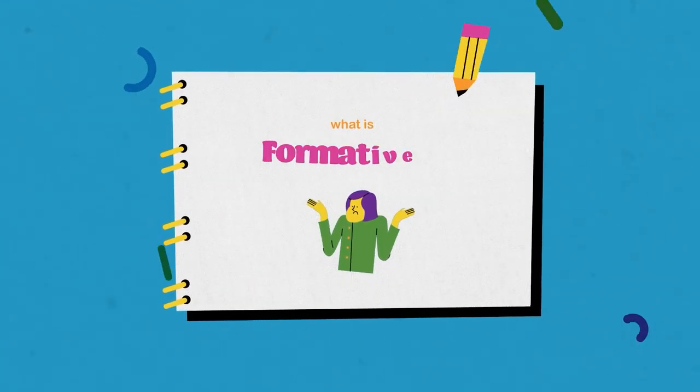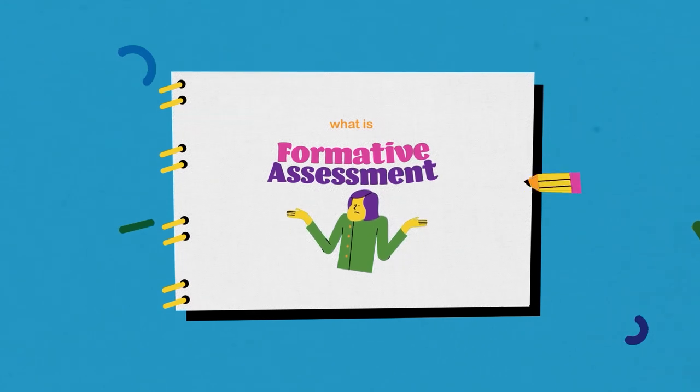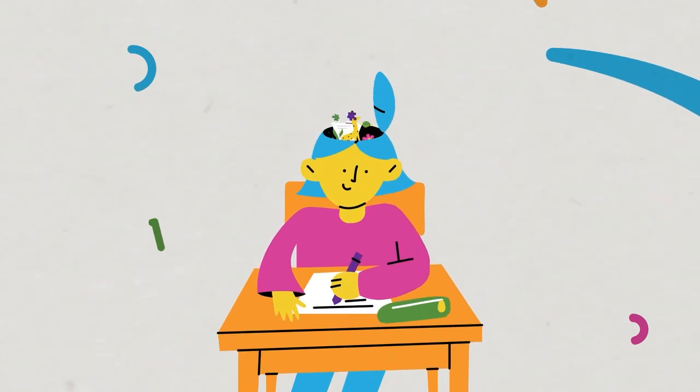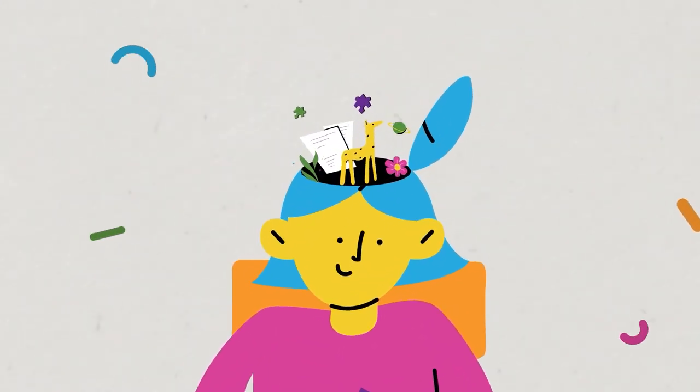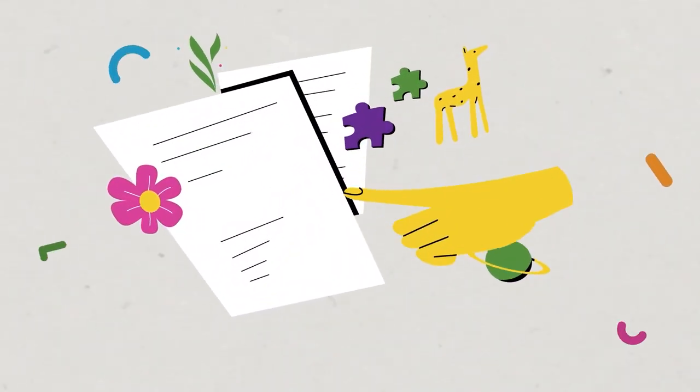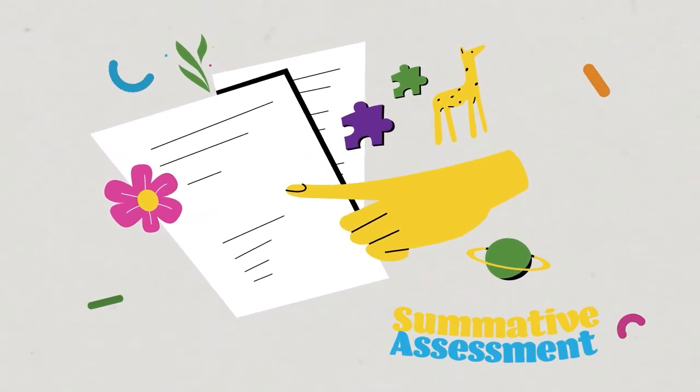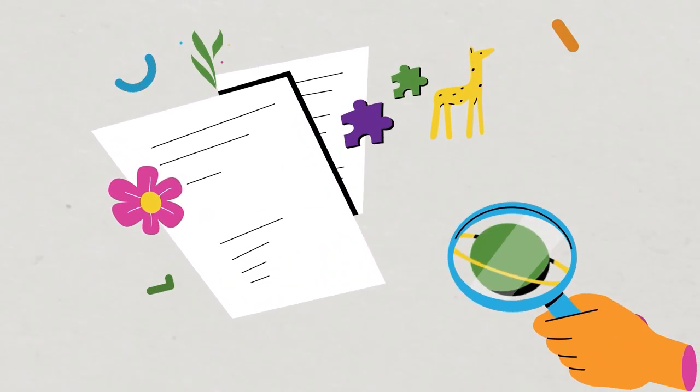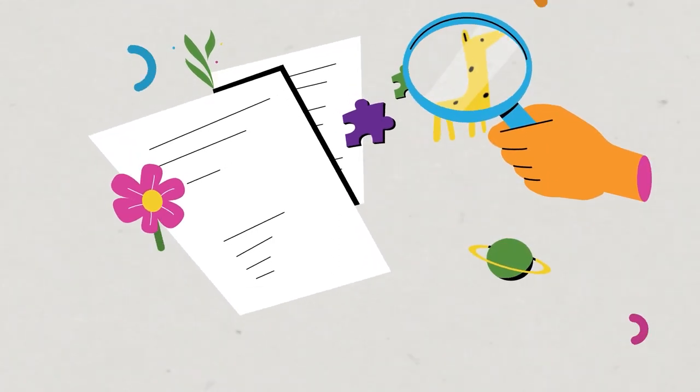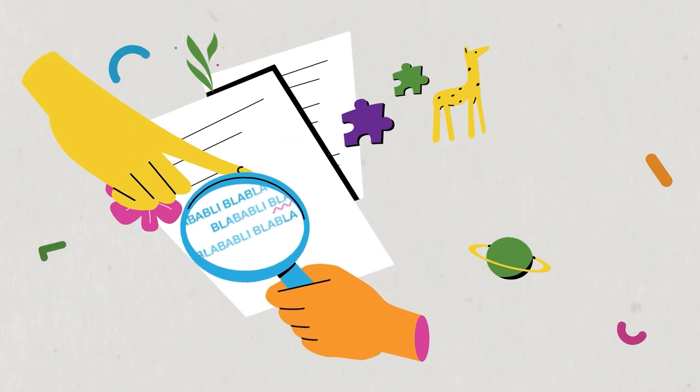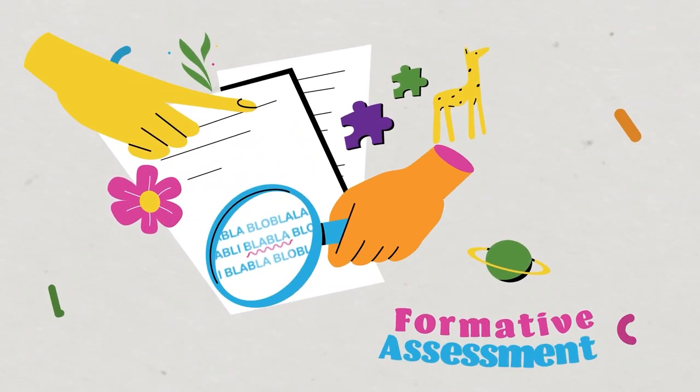What is formative assessment? There are two approaches to using data about student learning. When teachers use this information to check whether students have learned the topic they taught, they are performing a summative assessment. When teachers use the information to identify where students have most difficulty and plan actions to respond to this difficulty, they are performing a formative assessment.